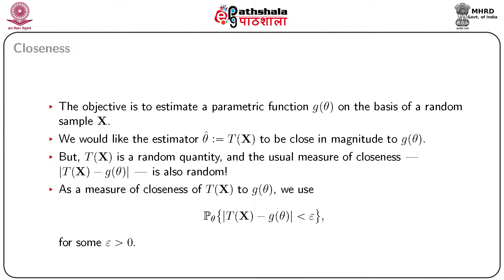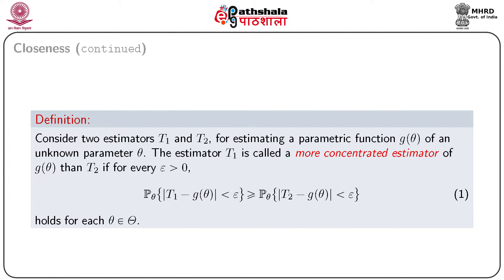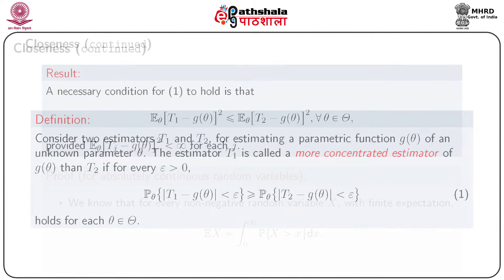One of such properties is the closeness property. Let us consider two estimators T₁ and T₂ for estimating a parametric function g(θ) of the unknown parameter θ. The estimator T₁ will be called more concentrated than T₂ if for every ε > 0, the probability under θ that |T₁ − g(θ)| < ε is greater than or equal to the probability under θ that |T₂ − g(θ)| < ε, for all θ ∈ Θ.